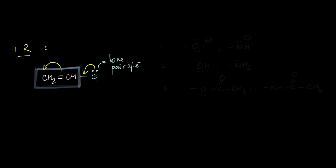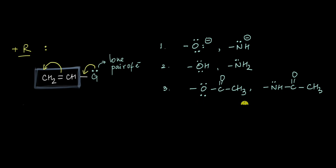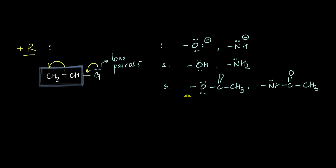Therefore, anything that has a lone pair of electrons — if you have something like O⁻ or even something like OCOCH₃ — because all of these have lone pairs which can be pushed into a pi system, all of these are what we call our plus-R groups.